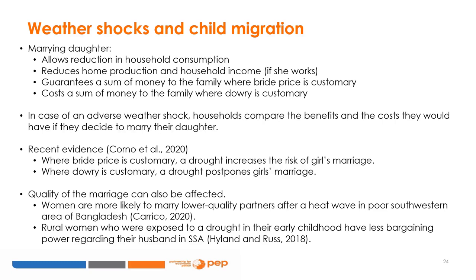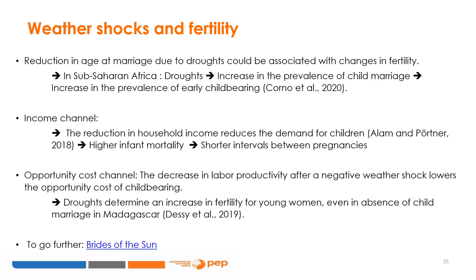In sub-Saharan Africa, Highland and Russ, 2018, found that rural women exposed to a drought in their early childhood were more likely to have a partner who makes decisions for the household alone. Reduction in age at marriage due to droughts could be associated with changes in fertility, as there is a strong relationship between age at marriage and age at first childbearing. In sub-Saharan African countries where bride price is customary and marriage is anticipated due to weather shocks, Corno and co-authors, 2020, found that a drought leads to a 4% increase in the annual probability of having a child before turning 18, and that the number of children a woman reports is 1% higher when she faced a drought during her teenage years.